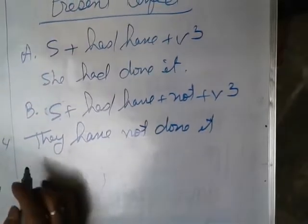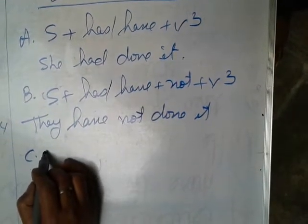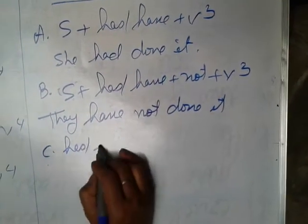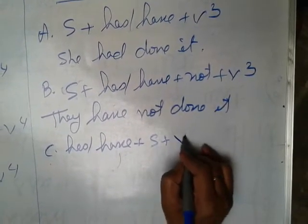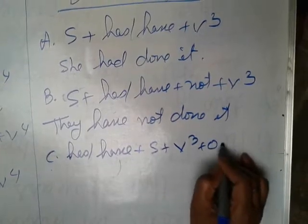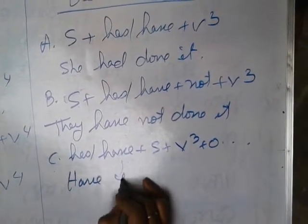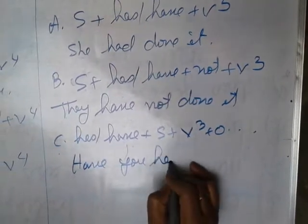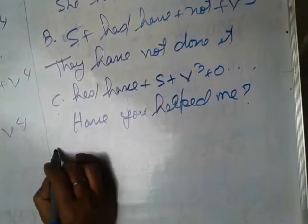When interrogative word is given, interrogative word - that is, start with has or have plus subject, V3 plus object. Have you helped me? Sign of interrogative, subject.